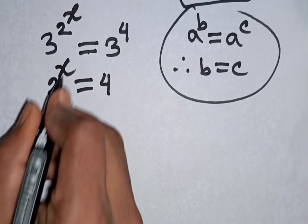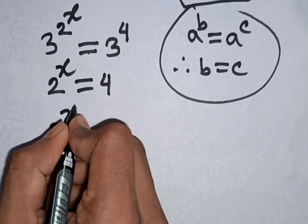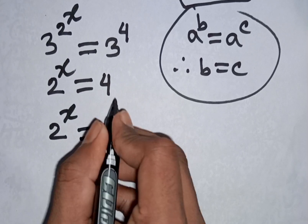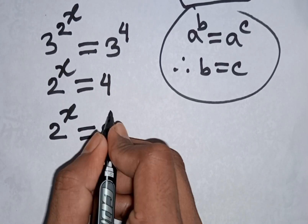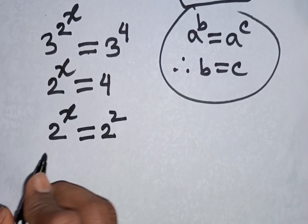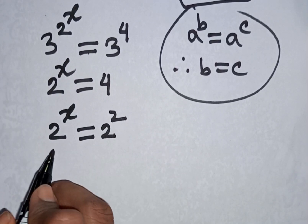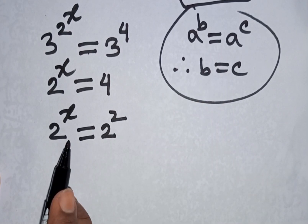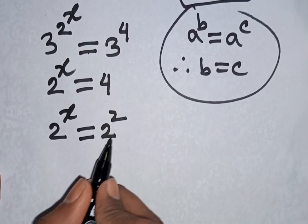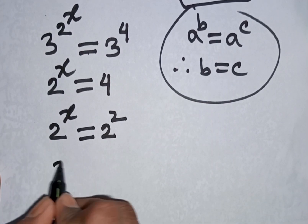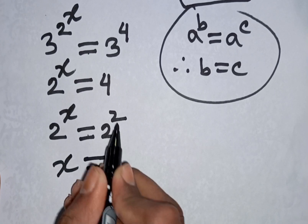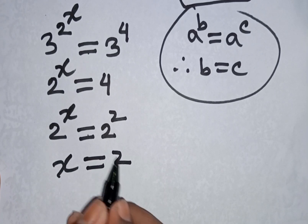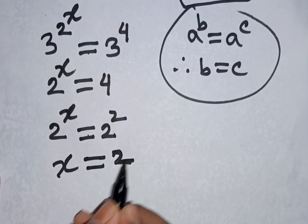We have 2 power x is equal to 4, which is the same as 2 power 2. Applying the same rule, since the bases are equal, x is equal to 2. This is the value of x and our final answer.